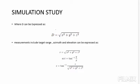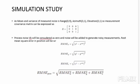Measurements include the target range, azimuth, and elevation, expressed as: Range = √(x²+y²+z²), Azimuth = arctan(y/x), and Elevation = arctan(z / √(x²+y²)). Given the mean and variance of measurement noise — range (0, 9), azimuth (0, 1), elevation (0, 1) — the measurement covariance matrix R = diag(9, 1, 1), i.e., [[9,0,0],[0,1,0],[0,0,1]].